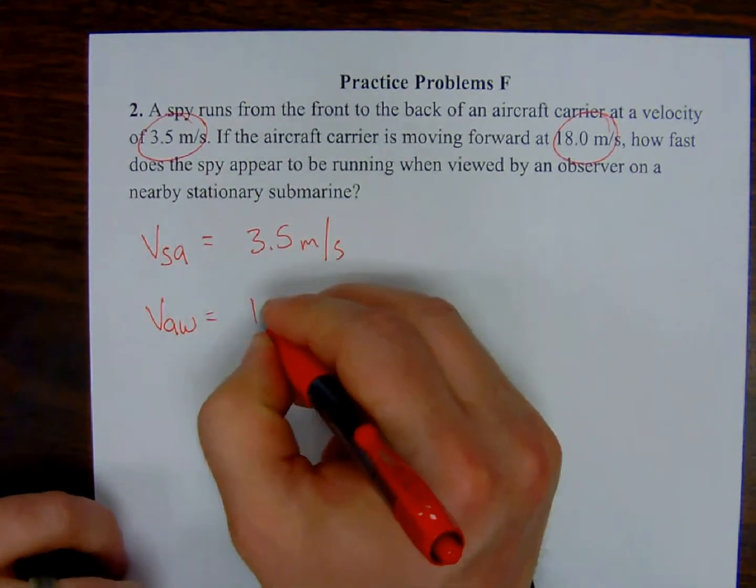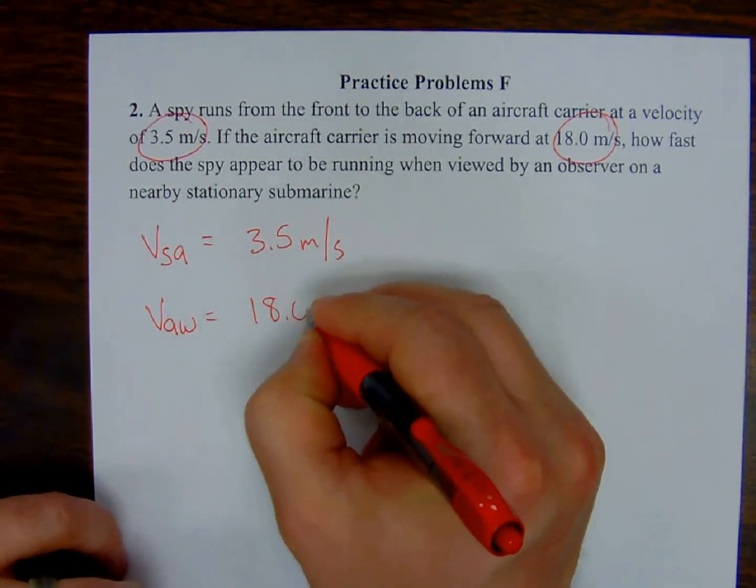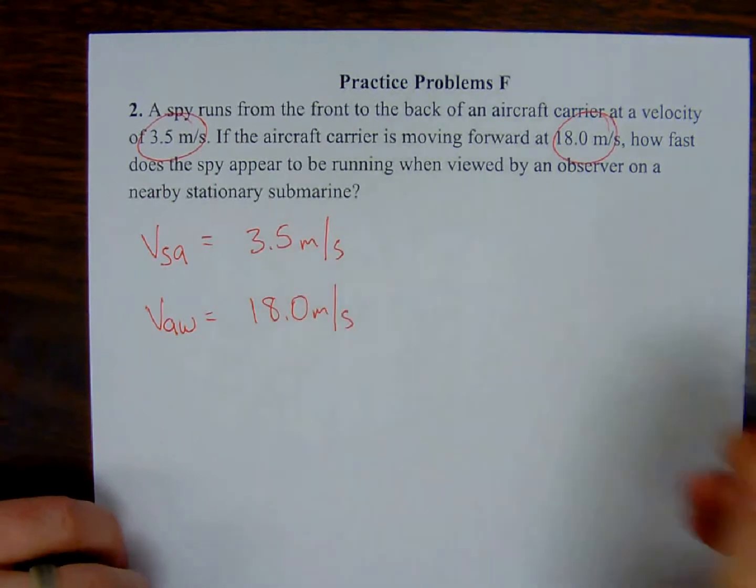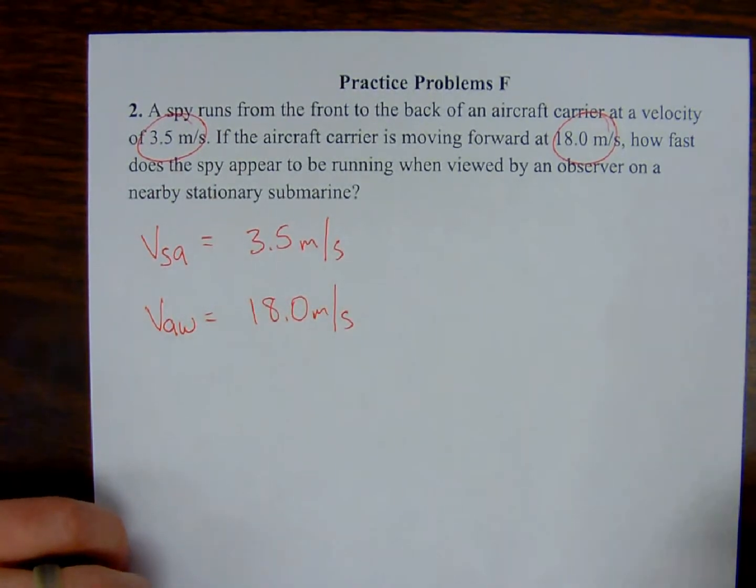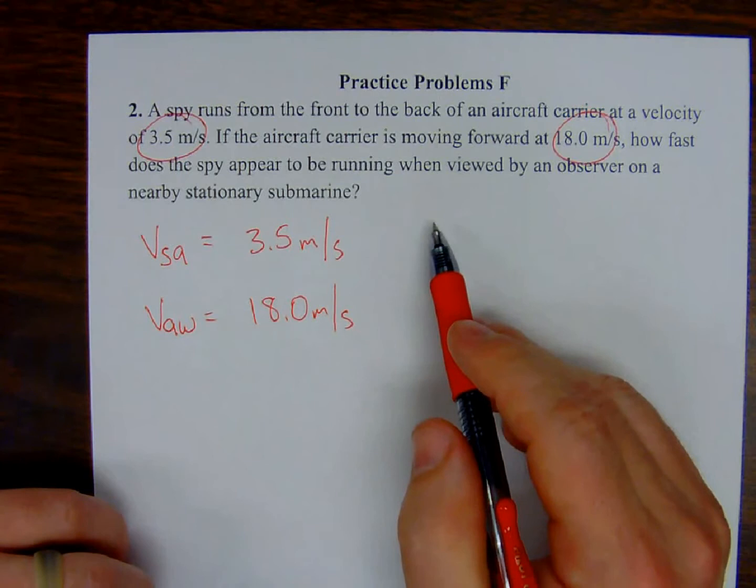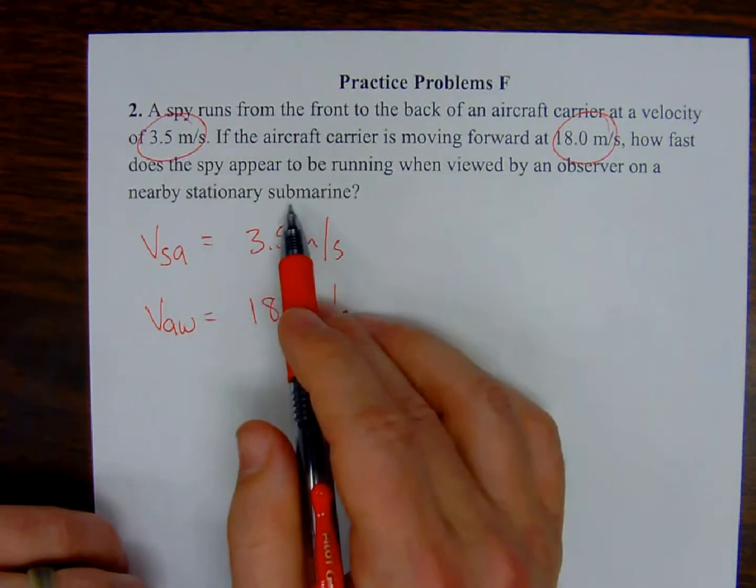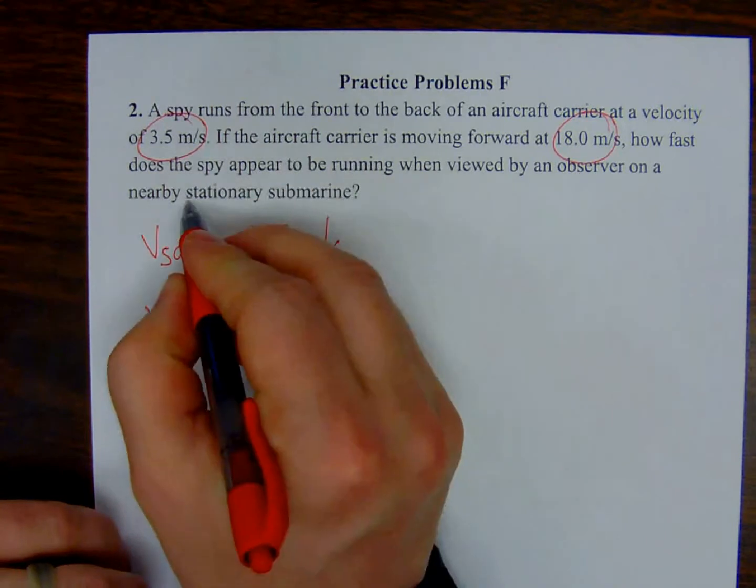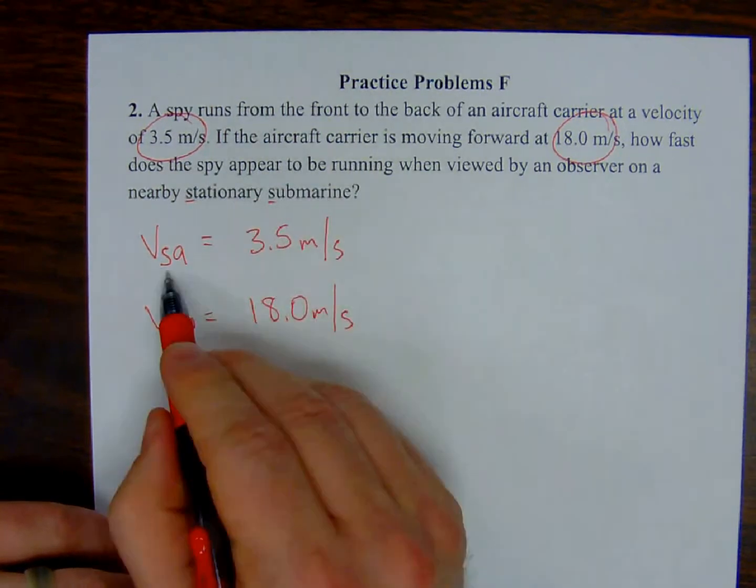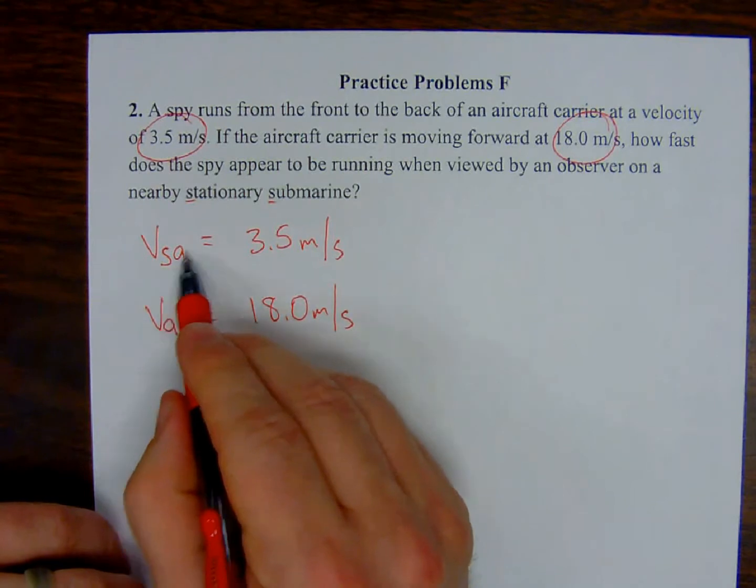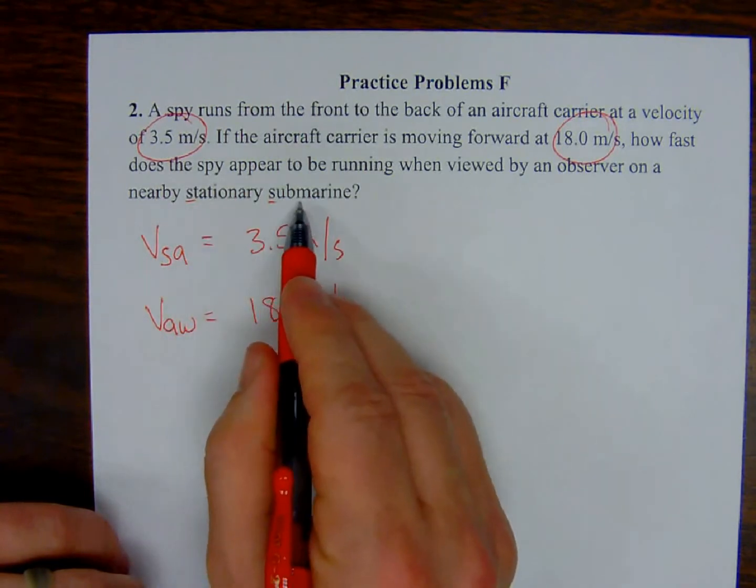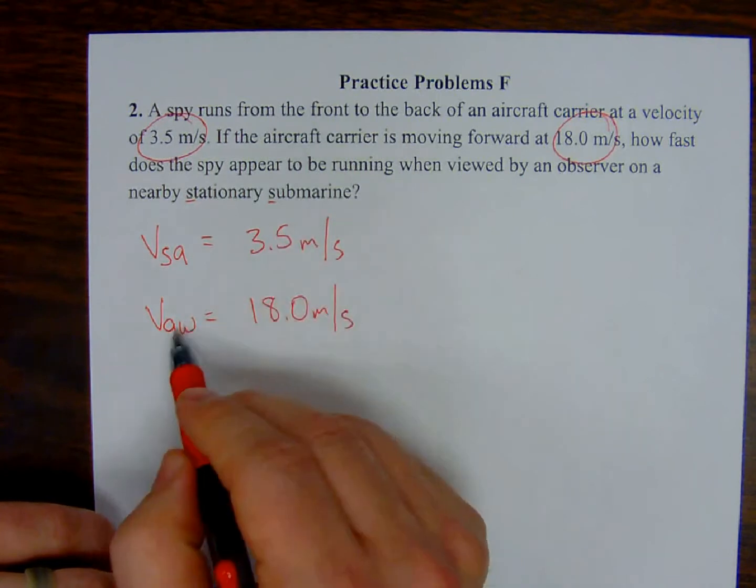I guess you actually could do aircraft carrier with respect to stationary submarine. The only problem with that is both of these start with S's. And I already have an S for the spy. So I don't want to use stationary submarine as my frame of reference just because it's going to make my subscripts weird. Now the stationary submarine is also floating in water. So that means we're safe.